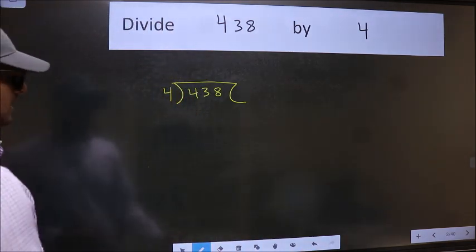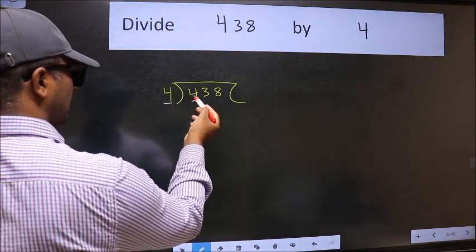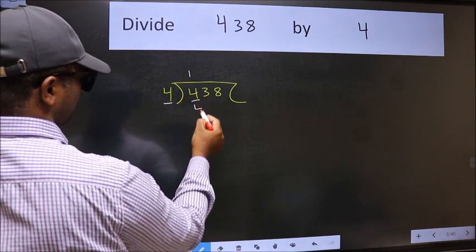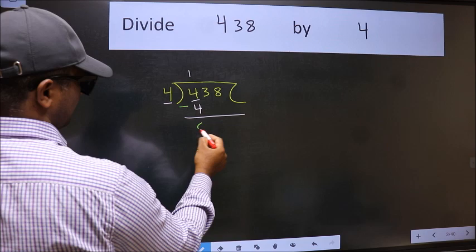Next. Here we have 4. Here also 4. When do we get 4 in 4 table? 4 once 4. Now we should subtract. We get 0.